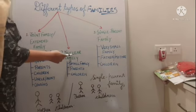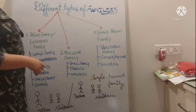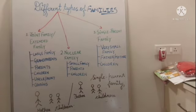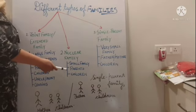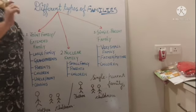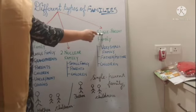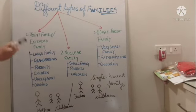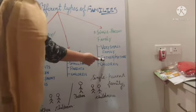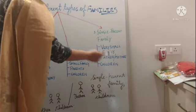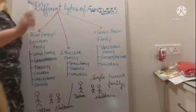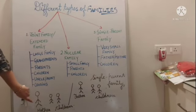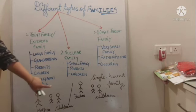Second is nuclear family. Nuclear family is also known as a small family, as in such type of families, parents live with their children only. Last but not the least is single parent family. Single parent family is a very small family — in such type of families, either the children live with their mother or they live with their father. You can better understand this from this picture.